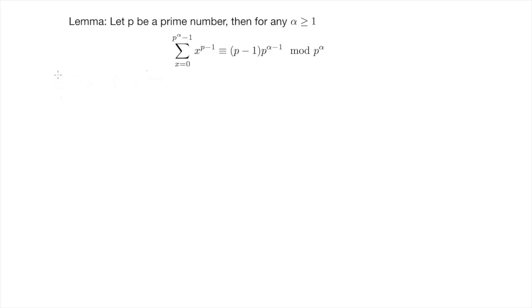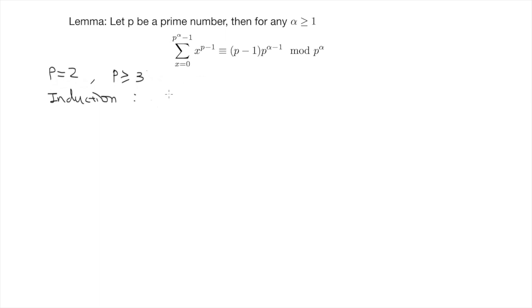Now let's focus on proving the lemma. When p = 2, x^(p-1) = x, and we can evaluate this sum directly, so the lemma follows easily. For p ≥ 3, p is an odd prime, and we proceed by induction on α. When α = 1, the statement holds by Fermat's little lemma.